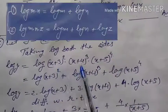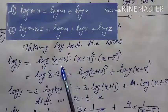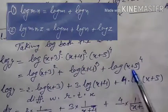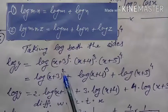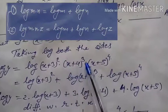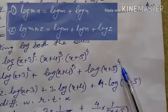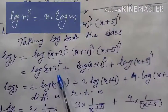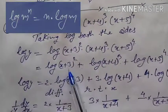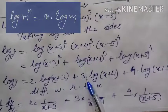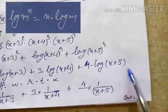The first, second, and third factors are in multiplication, so by logarithm: log(mn) = log m + log n. So it becomes log(x+3)² + log(x+4)³ + log(x+5)⁴. Now by the power rule, 2 comes out: 2·log(x+3) + 3·log(x+4) + 4·log(x+5).